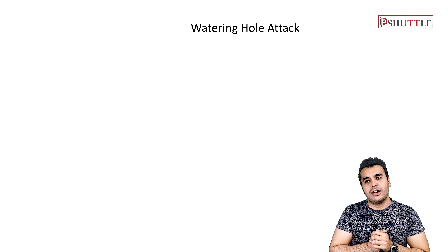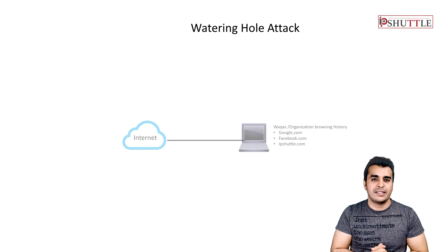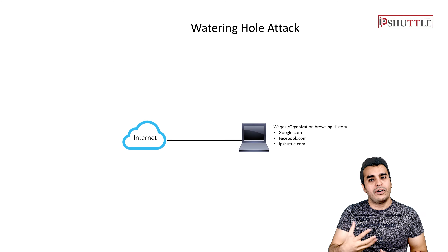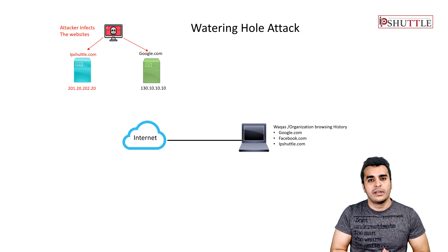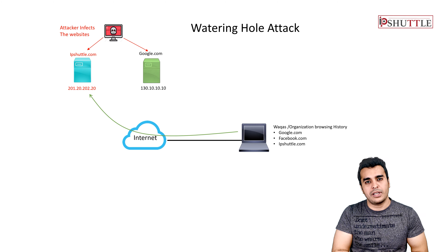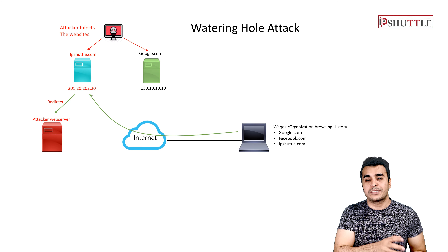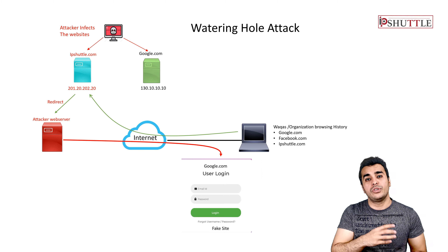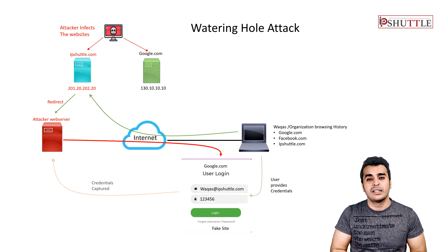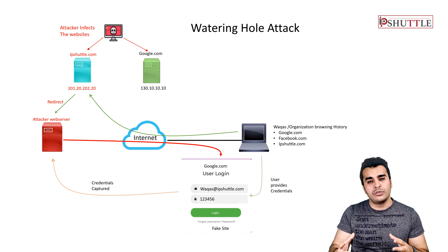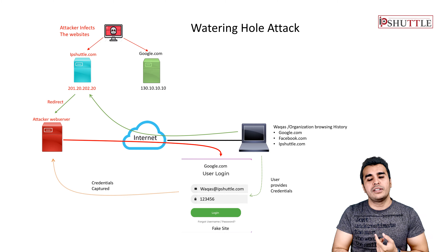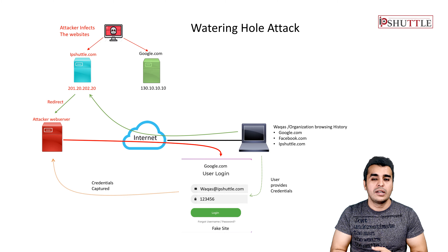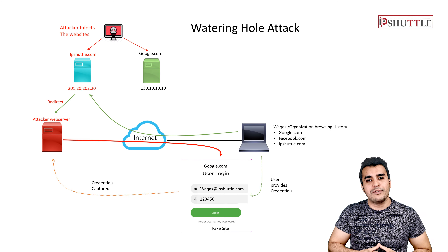Watering hole attacks are very sophisticated. You profile the organization and their users' behavior — what websites they use most — then infect those websites using exploits to install malware or redirect users to your own website to install malware. This way you infect multiple users across the organization, get unauthorized access, install malware, bypass all authentication and authorization controls, and gain full access into the network.